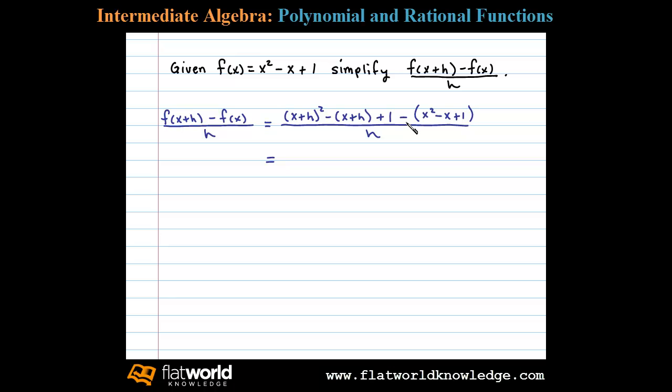Now all that's left to do is to simplify. (x+h)² is equal to x² + 2xh + h². Distributing the negative leaves us with -x - h + 1.